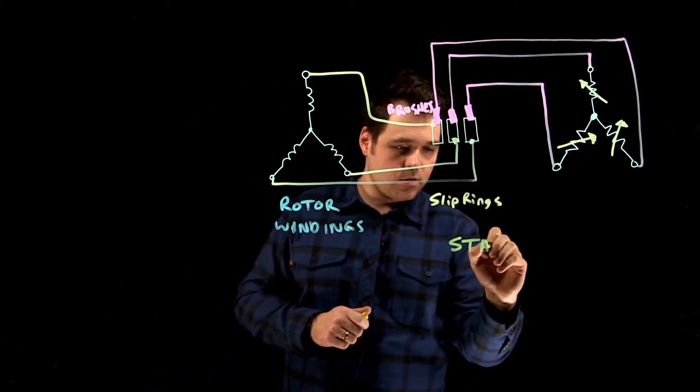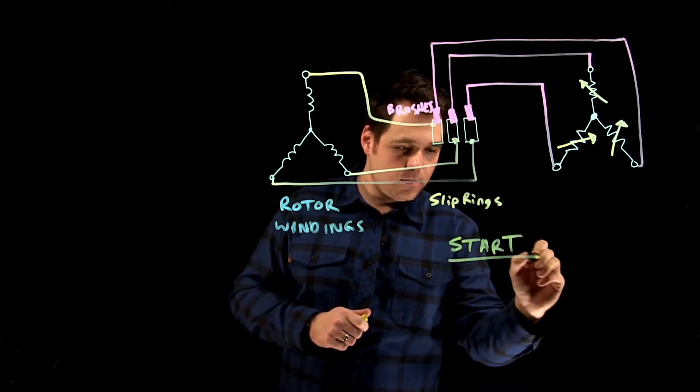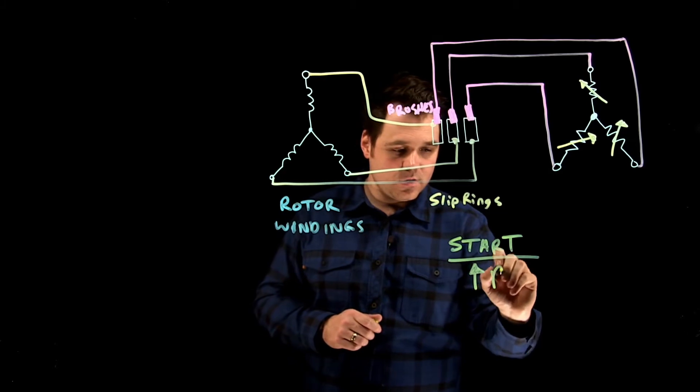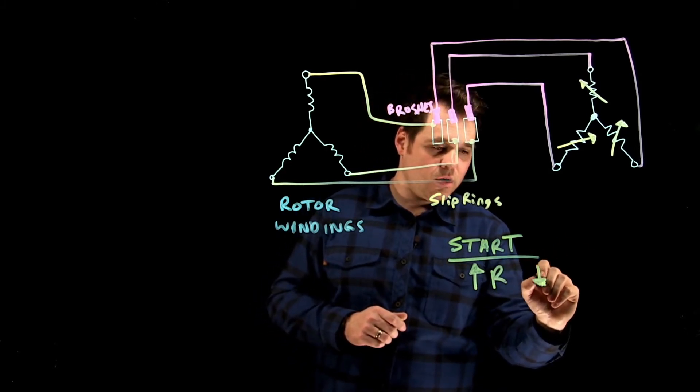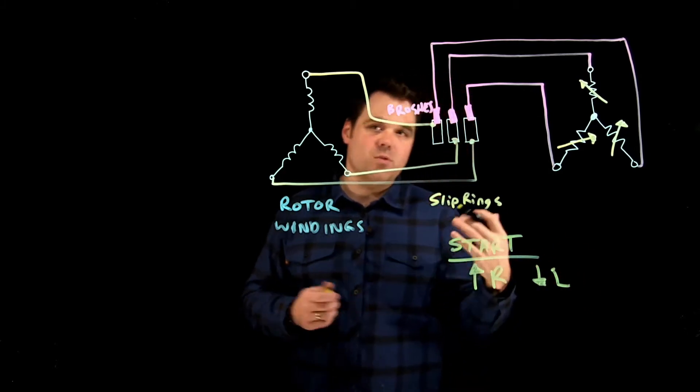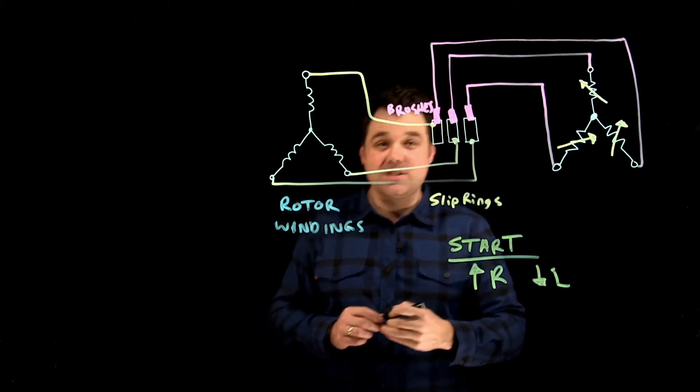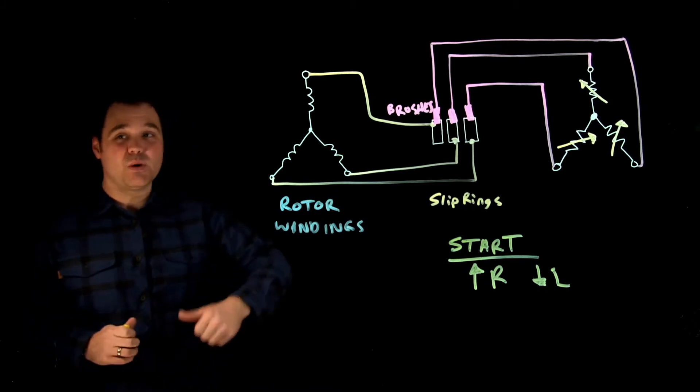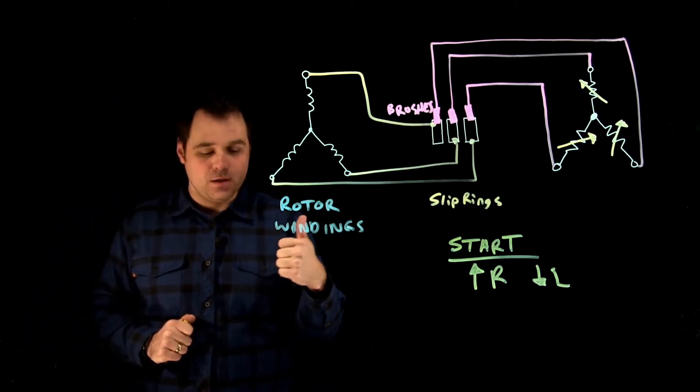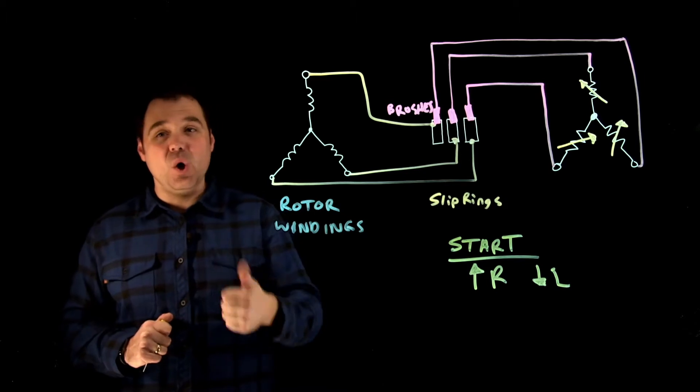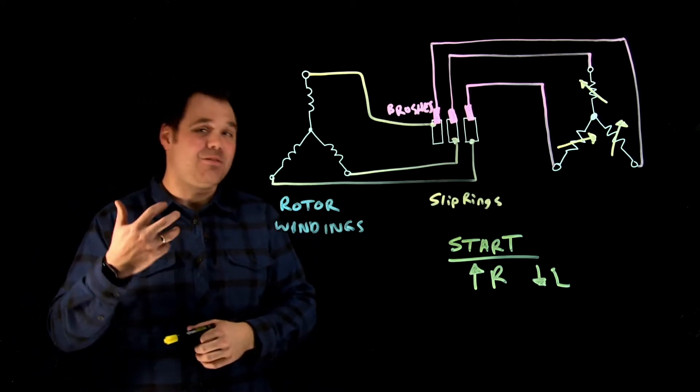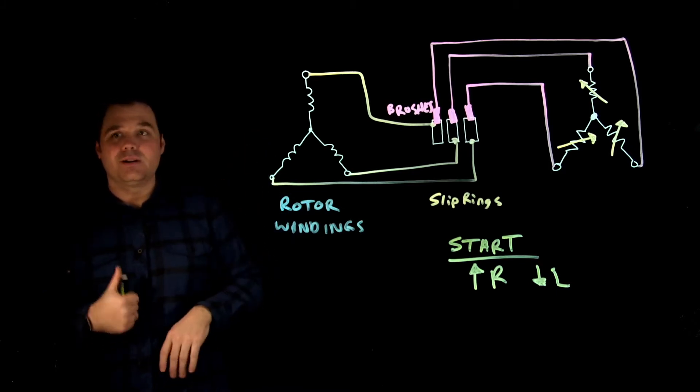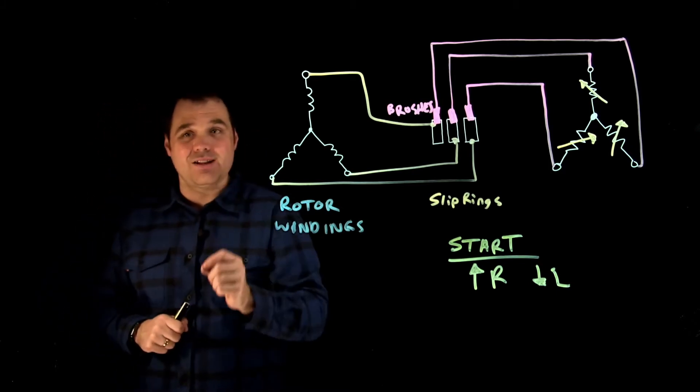And this is really important. So at start, I'm going to have a high resistance and a low inductance, or low x. So it's similar to a design D rotor. Now what that does is that gives me a really high starting torque, but a very low starting current. So I'm going to get you know, 275, 300% of my starting torque, and a low starting current, so a low inrush current, that's awesome.